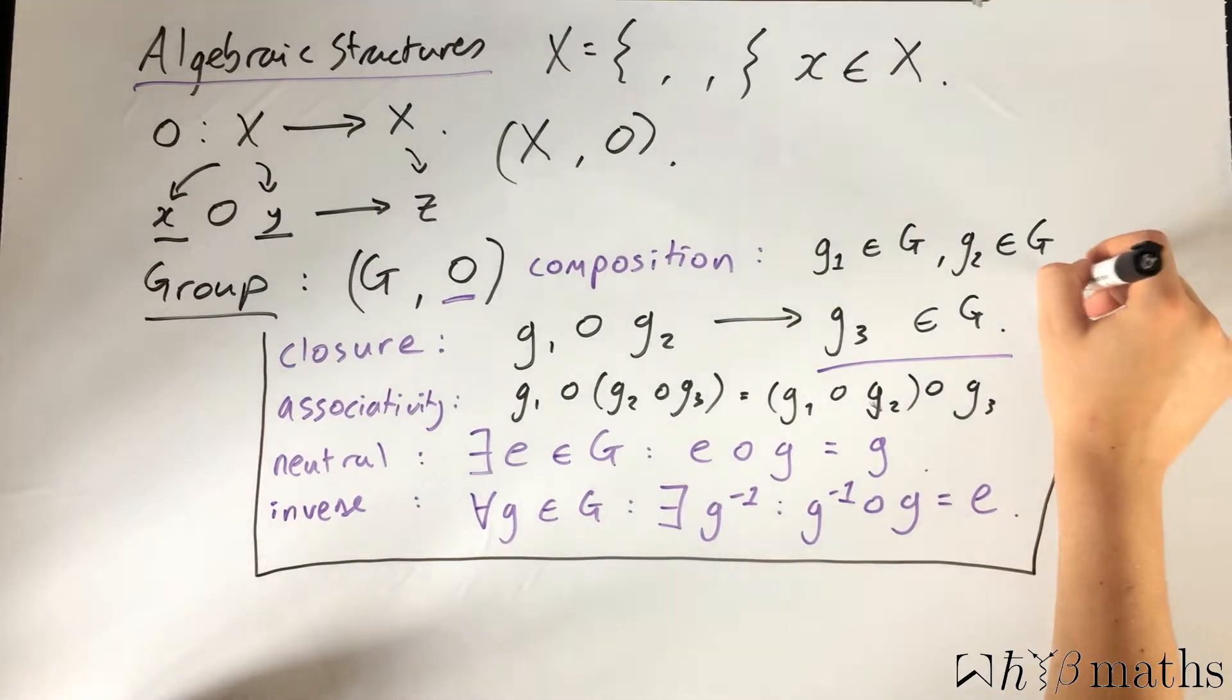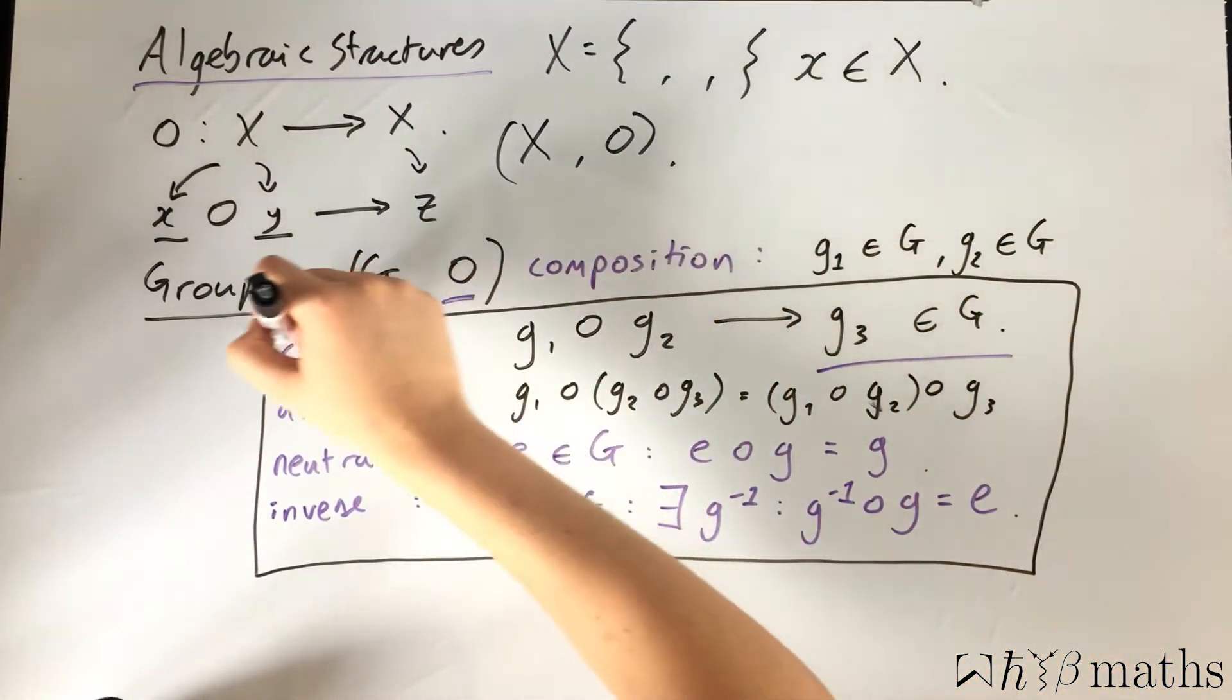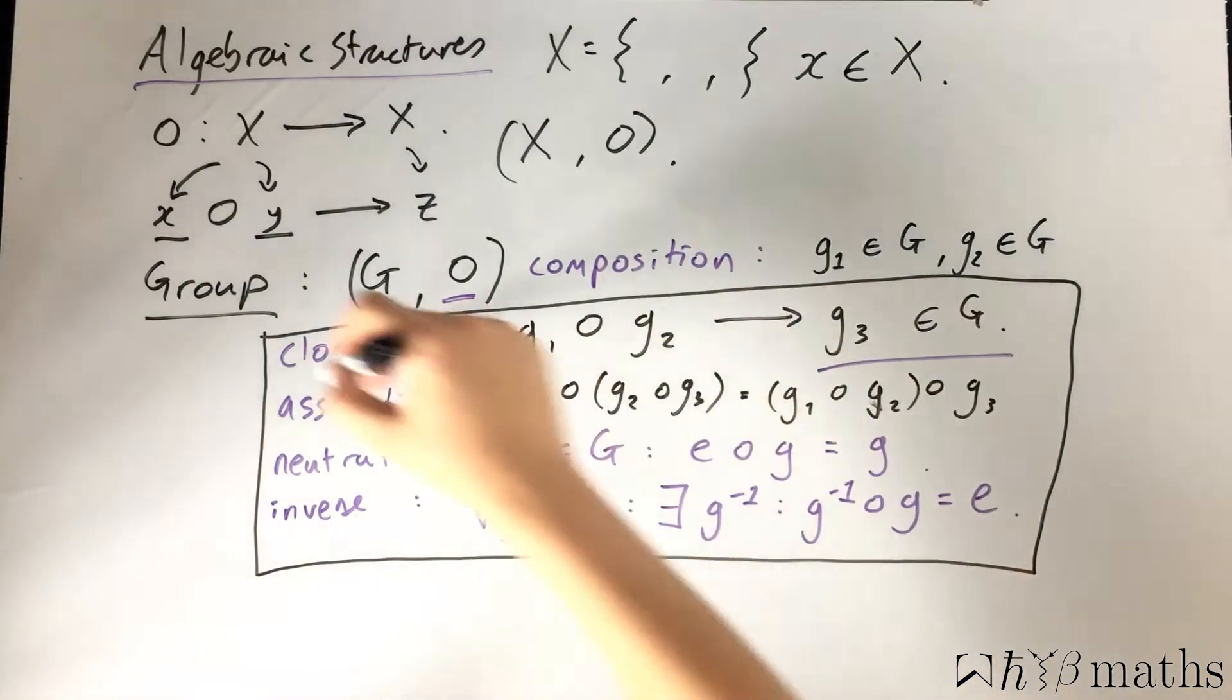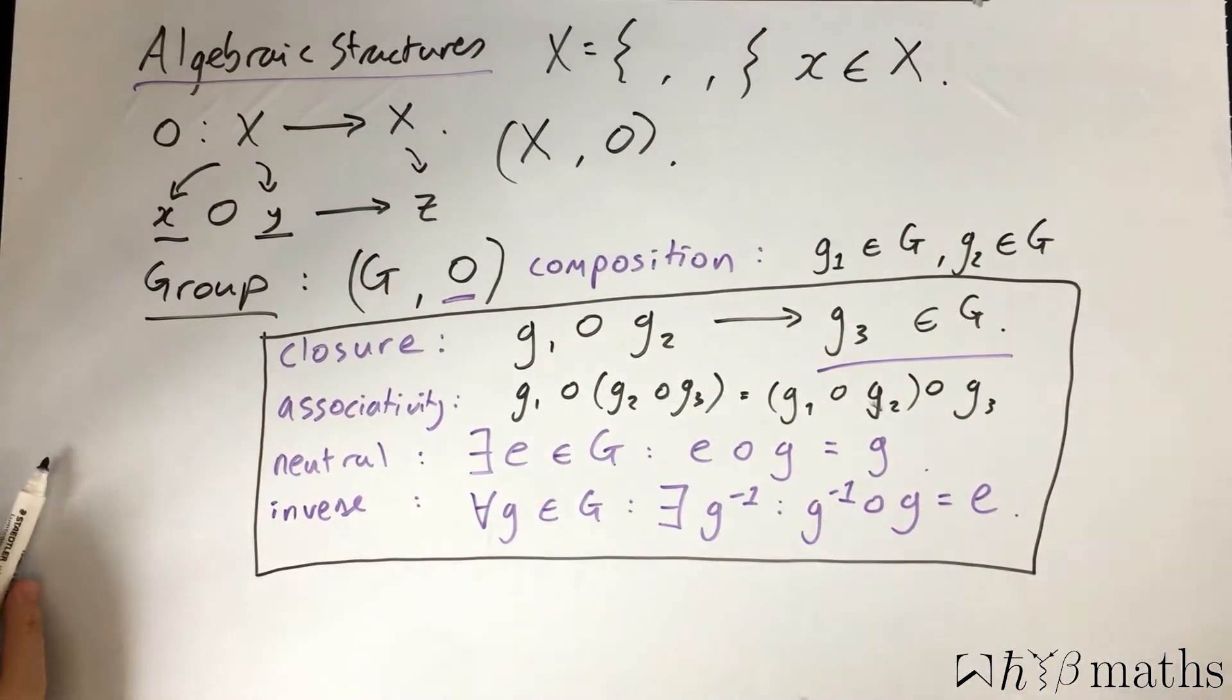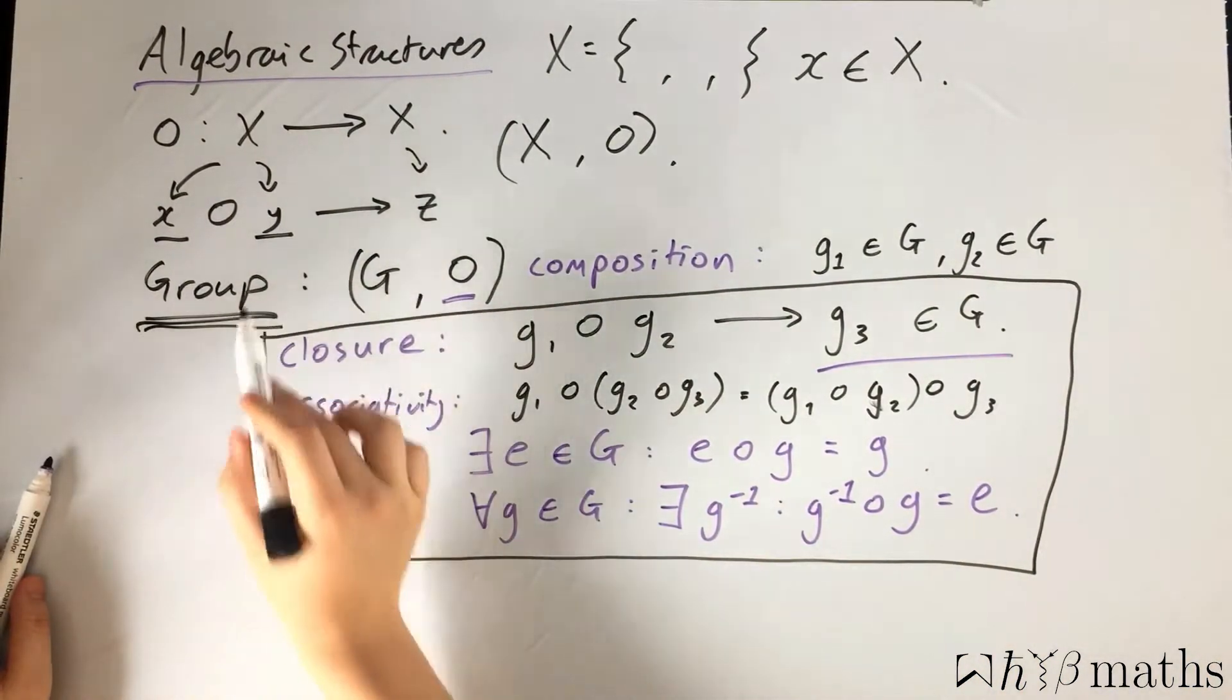So the set G, taken together with the operation circle, which follows these rules that I've written here, all together define a group.